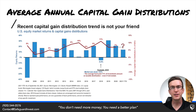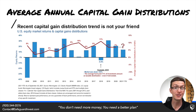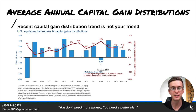Looking at the average mutual fund capital gain distribution versus US stock performance going back in history, capital gain distributions are quite consistent — anywhere from 2% in 2009 all the way up to 11% in 2018. These aren't exactly correlated with stock market performance. In 2018, we saw 11% capital gain distributions despite the market being down around 5%. In 2008, we saw 8% capital gain distributions despite the market being down 35-plus percent.